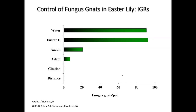Here are results of replicated trials we've done. We tried drenching pots with induced fungus gnat infestations, comparing insect growth regulators: N-Star, Azatin, Adept, Citation, and Distance. The numbers of fungus gnats that emerged from treated pots showed that Azatin, Adept, Citation, and Distance were the most effective. Azatin is a botanical biopesticide that organic growers can use; the others are more conventional. All are growth regulators that can be used for fungus gnat larvae.